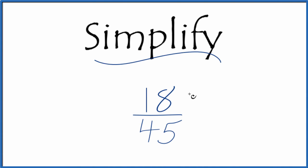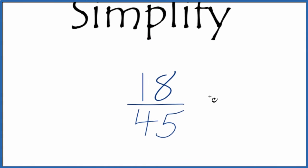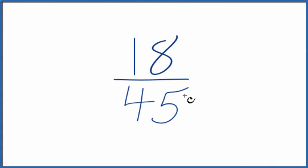Let's simplify the fraction 18/45. And here's how we do it. We're looking for another fraction that is equivalent to 18 over 45. It has the same value, we just reduce it to its lowest terms.